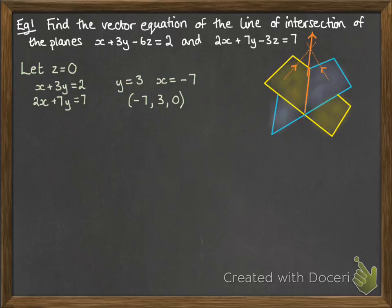So if we can find that vector that is the cross product of the normals, then we've also got the direction vector of the line of intersection of those two planes. So we can easily get the normals from the equations of the plane. So the first one is 1, 3, minus 6 and the second plane is 2, 7, minus 3. Now we do the cross product of those.